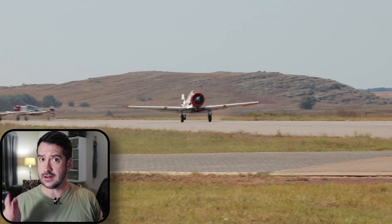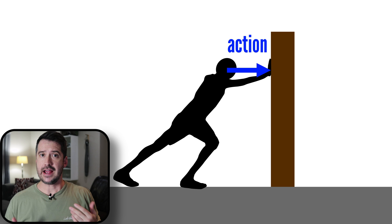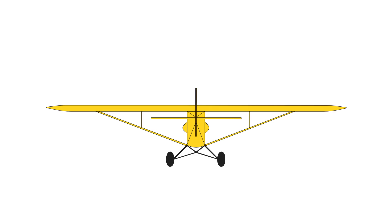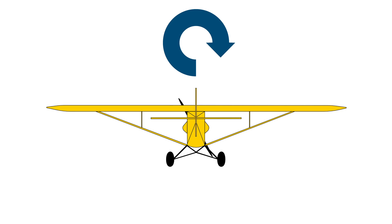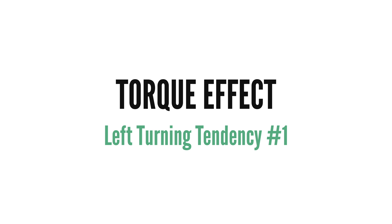Propeller effects can be seen as the side effects experienced as a direct or indirect result of an engine spinning a propeller. Newton's third law states that for every action there's an equal and opposite reaction. So the equal and opposite reaction of a propeller spinning in one direction is the rest of the airplane trying to spin in the opposite direction. Viewed from the pilot's position, most engines spin propellers clockwise, so the rest of the airplane will want to spin anti-clockwise or bank to the left. This is called the torque effect and is the first of four left-turning tendencies a propeller airplane experiences.